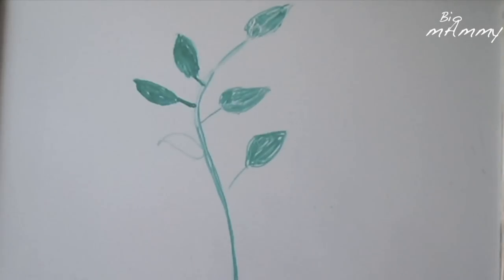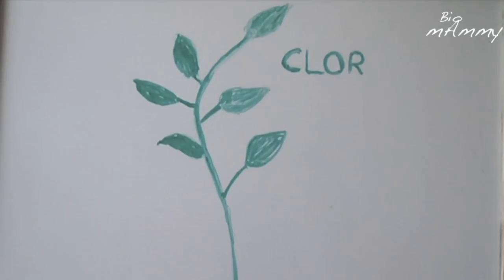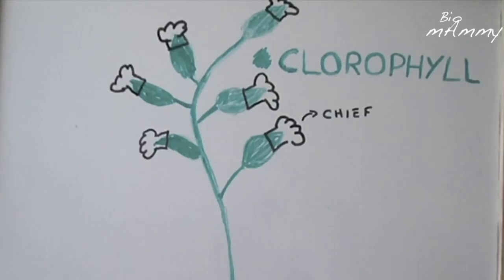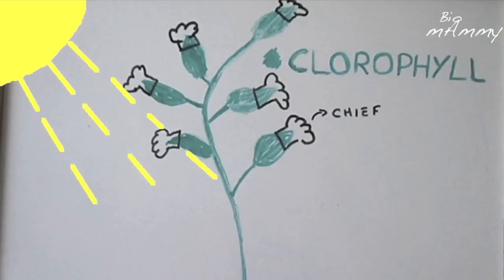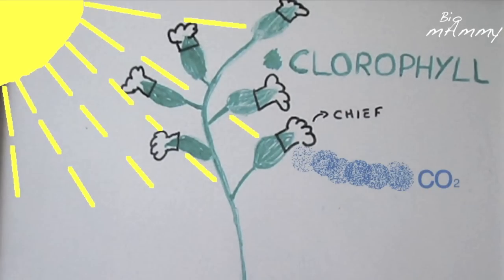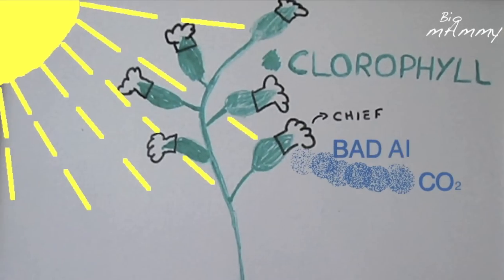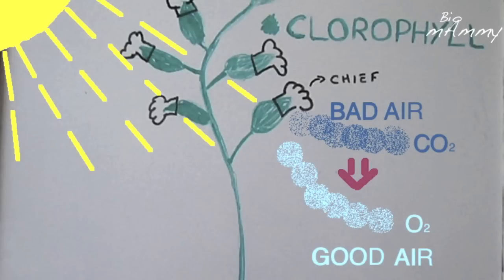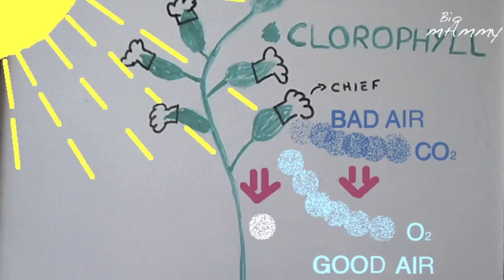Plants have a green chemical called chlorophyll, and that gives the green color to the leaves. Using chlorophyll, the leaves produce food for the whole tree. They also need sunlight and water, and they transform bad air into good air, and they provide food for the tree, which is sugar — a type of sugar which is partly stored and partly used to grow the tree.